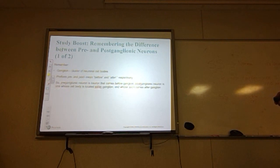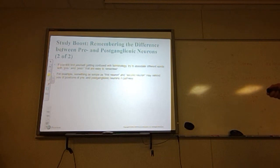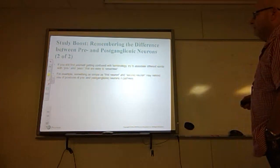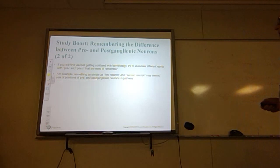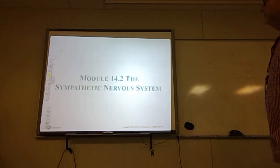A post-ganglionic neuron is located within the ganglion and its action comes after the ganglion. If you're still confused with terminology, try to associate words with pre and post. For sports fans: the pre-game show comes on before the game, the post-game show comes on after the game. Similarly, think of the first neuron and second neuron to remind you of the positions of pre- and post-neurons in the pathway.